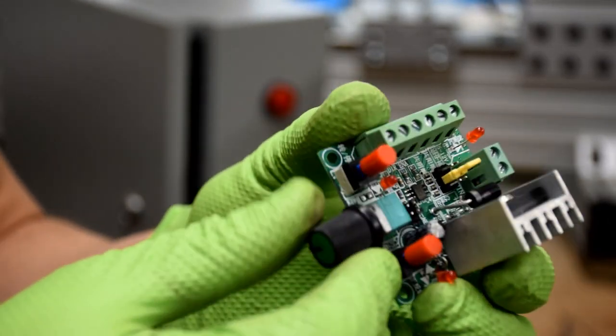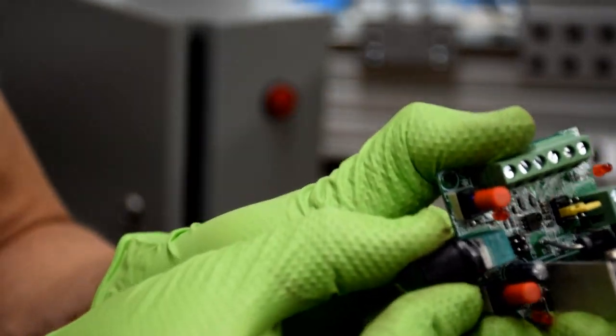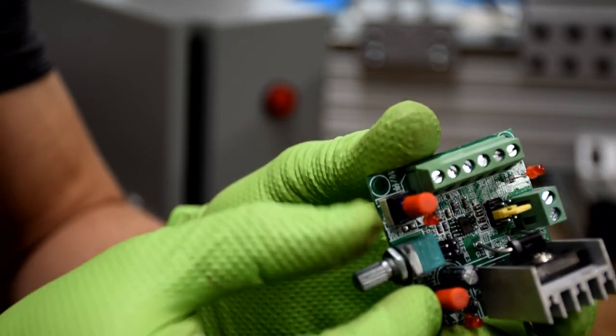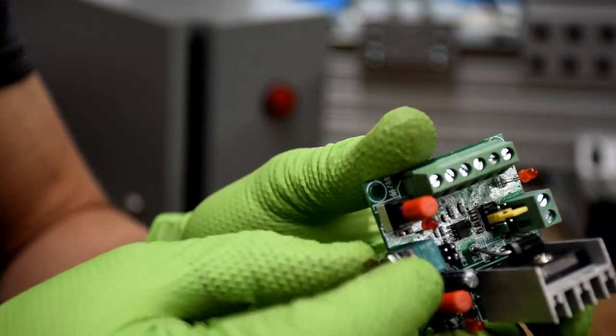What you're going to want to do is remove the knob, just pull it right off, and undo the nut and the washer.